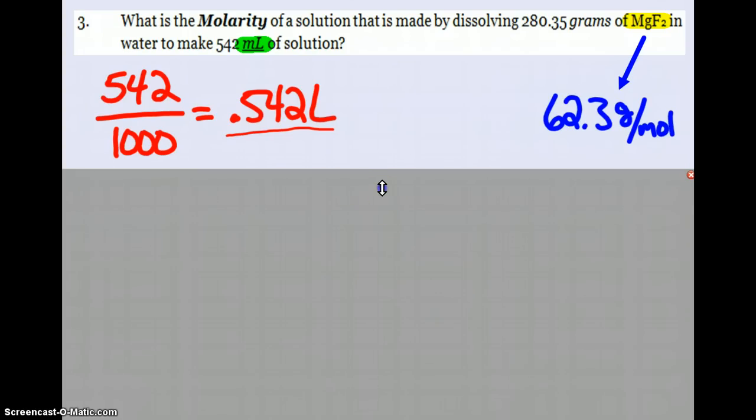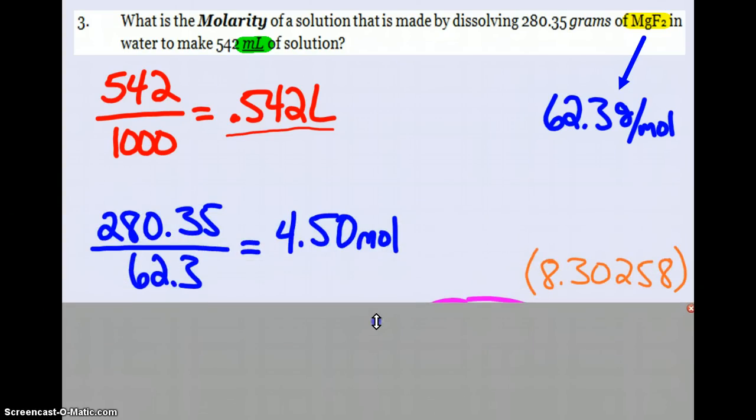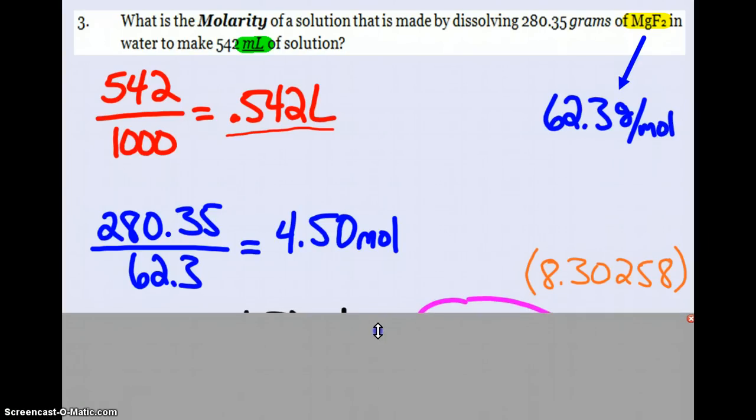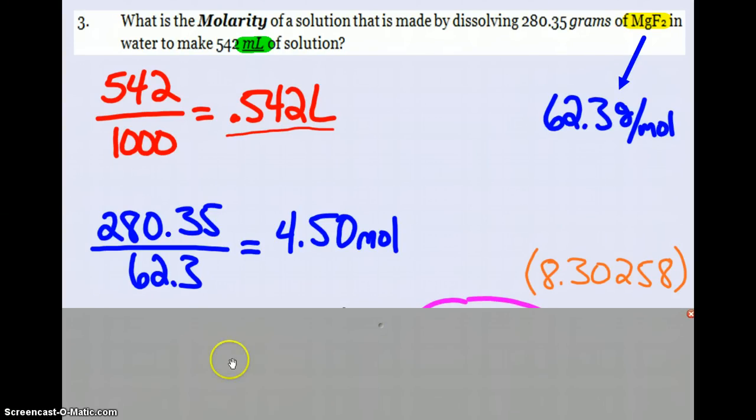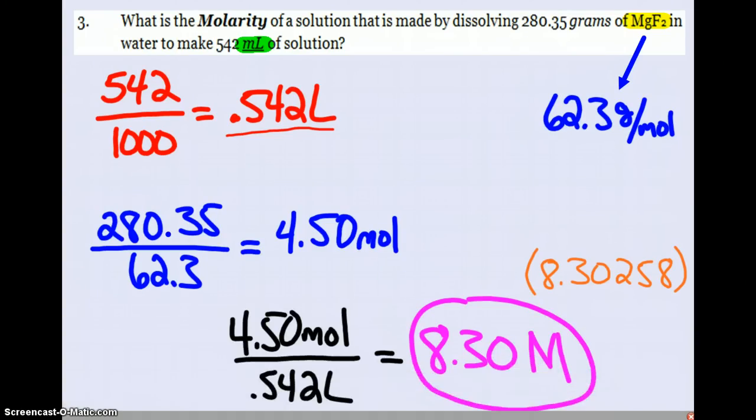I take the 280.35 grams divided by my molar mass, so I've got 4.5 moles. Now I can do the moles per liter. When I take that, my calculator says 8.30258. Three sig figs because of the 542 milliliters, so 8.30 capital M.